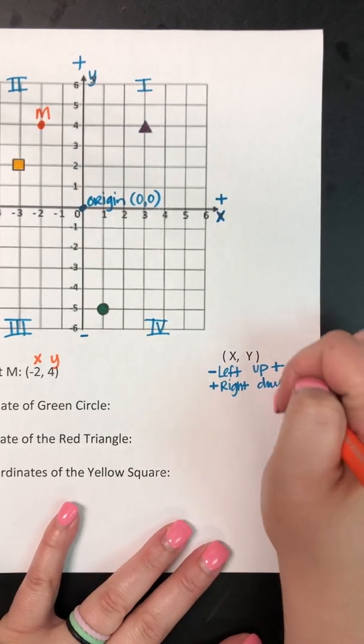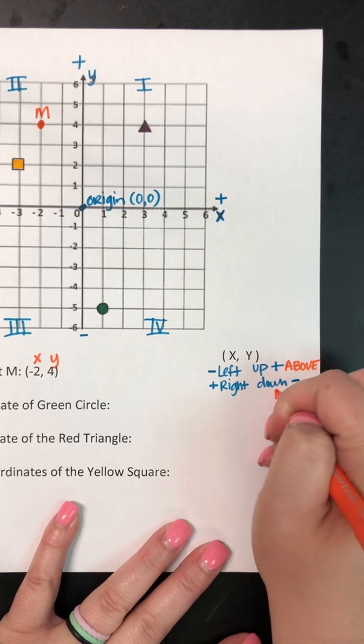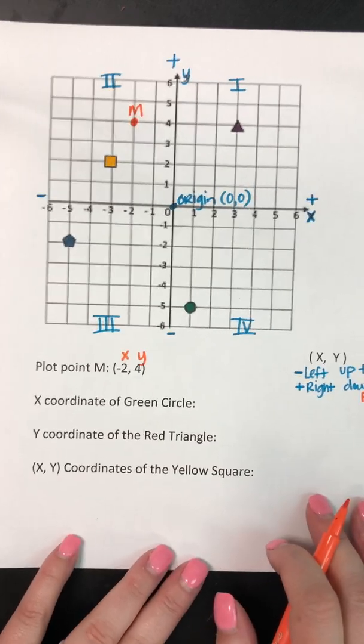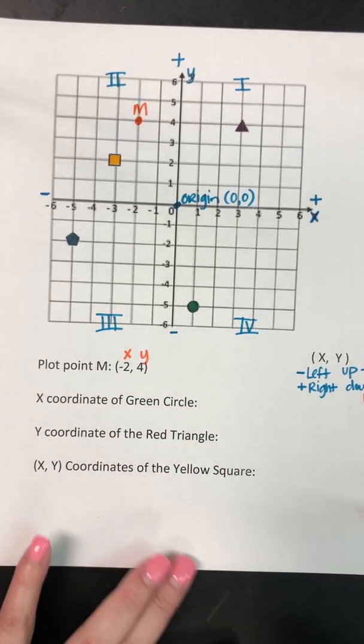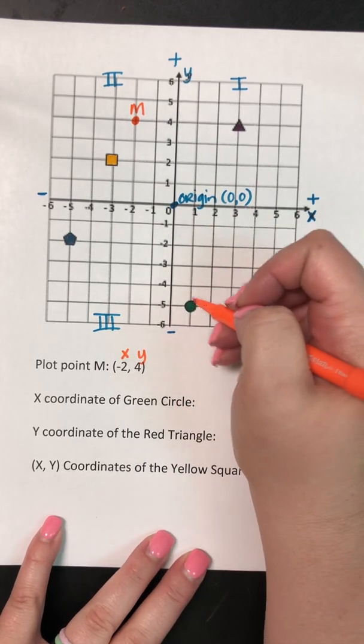Sometimes instead of up they might say above or for down they might say below. All right, so then we're gonna talk about the x-coordinate versus the y-coordinate. So it says the green circle, so this is our green circle.